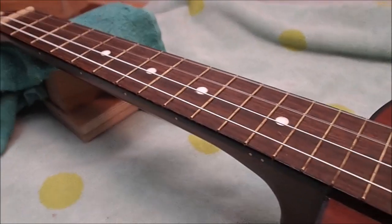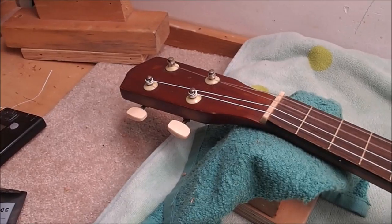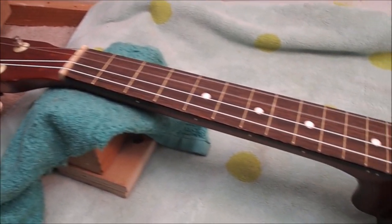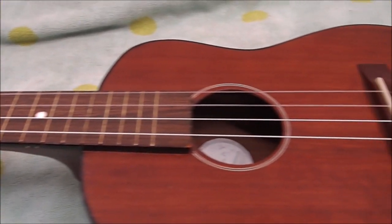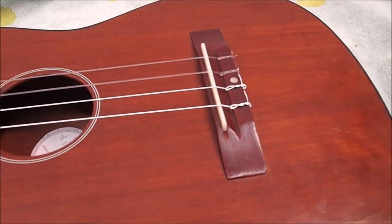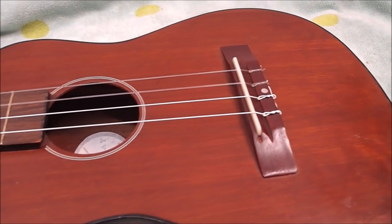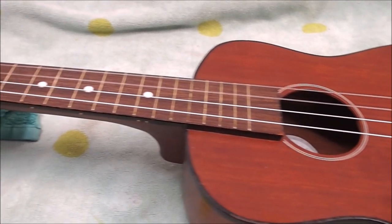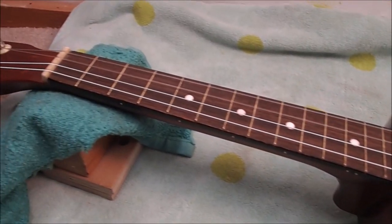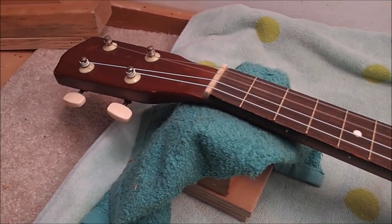Those dots look appropriate. I've got it strung with the top four strings from a classical set, which is basically what they sell you when you buy baritone ukulele strings. Works just the same. I'll try to make some noise with this thing, but these are nylon strings and they haven't finished stretching yet, so it might go out of tune a little bit while I play. I'm sure you'll understand.